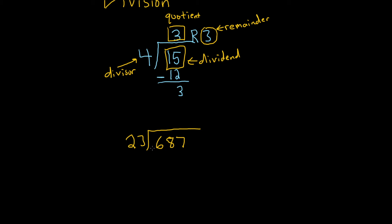So then you look at the 68, can 23 go into 68? Well, if you do 23 times 3, let's see, 3 times 3 is 9, 3 times 2 is 6, oh, just barely too big, right? I mean, it's 69, so it's one bigger than 68.